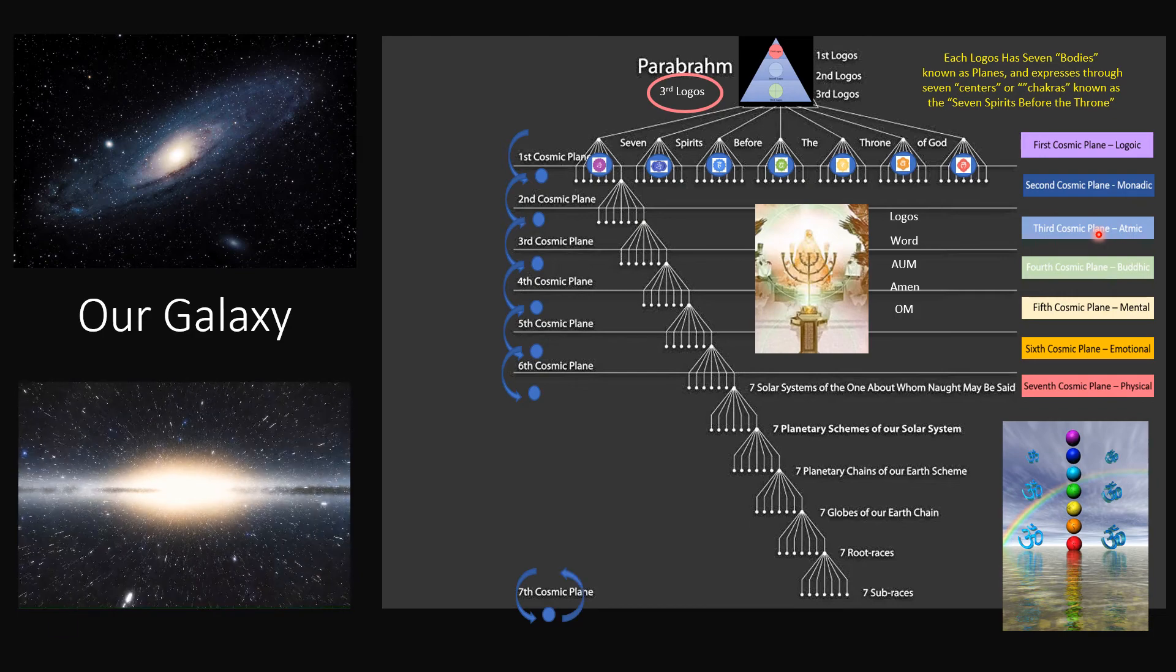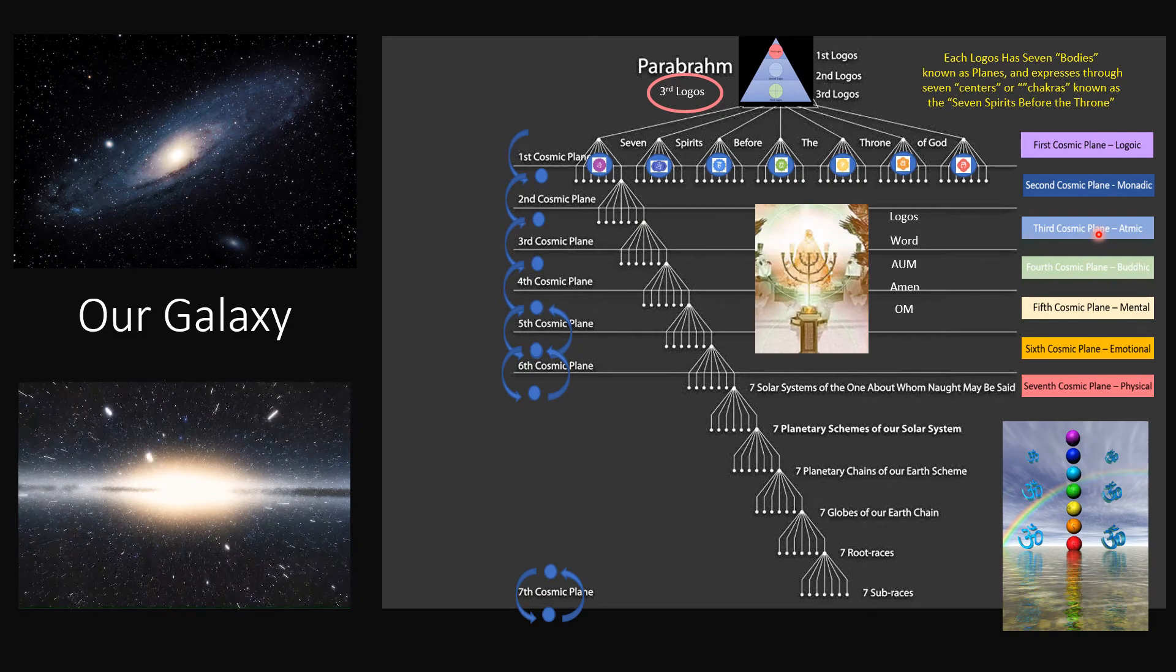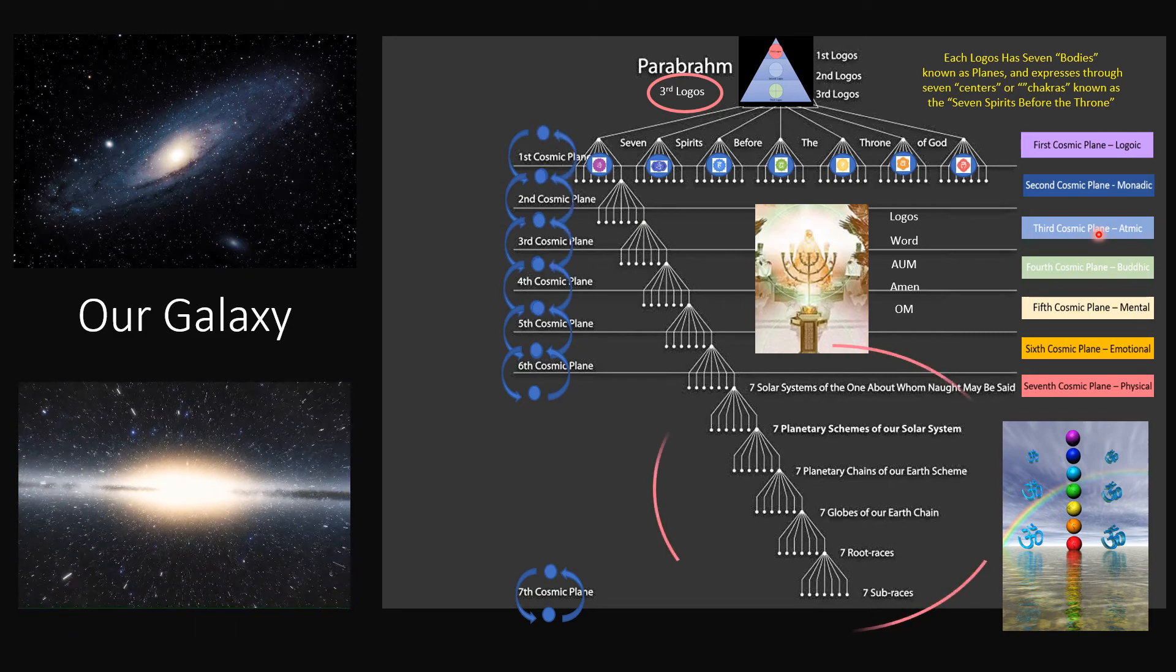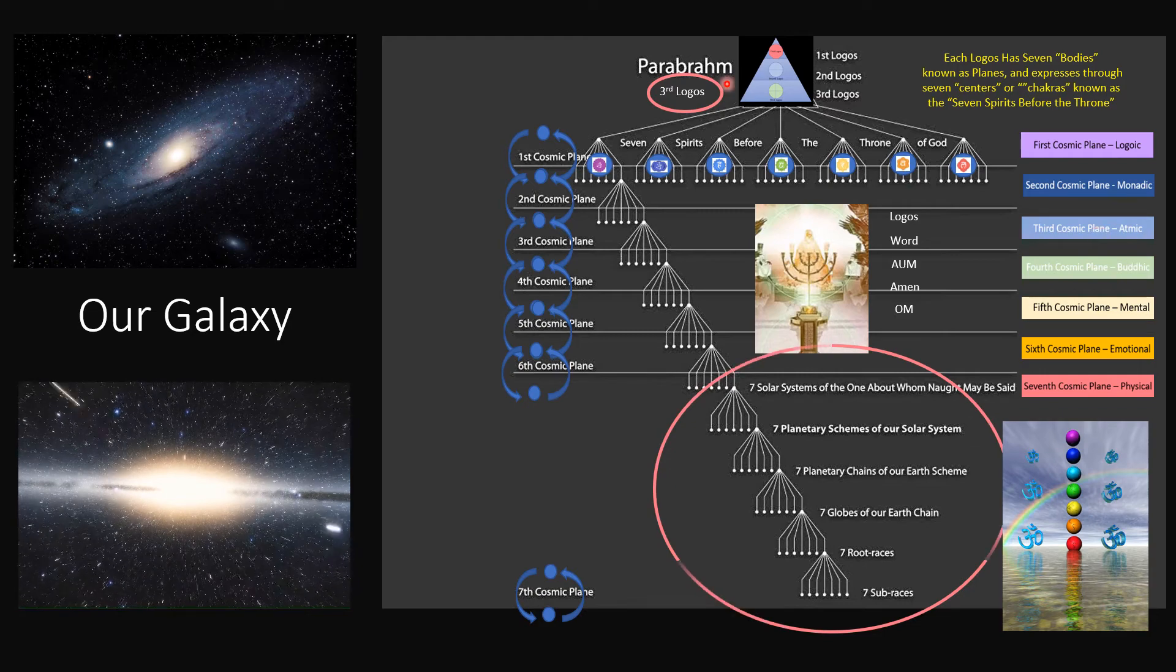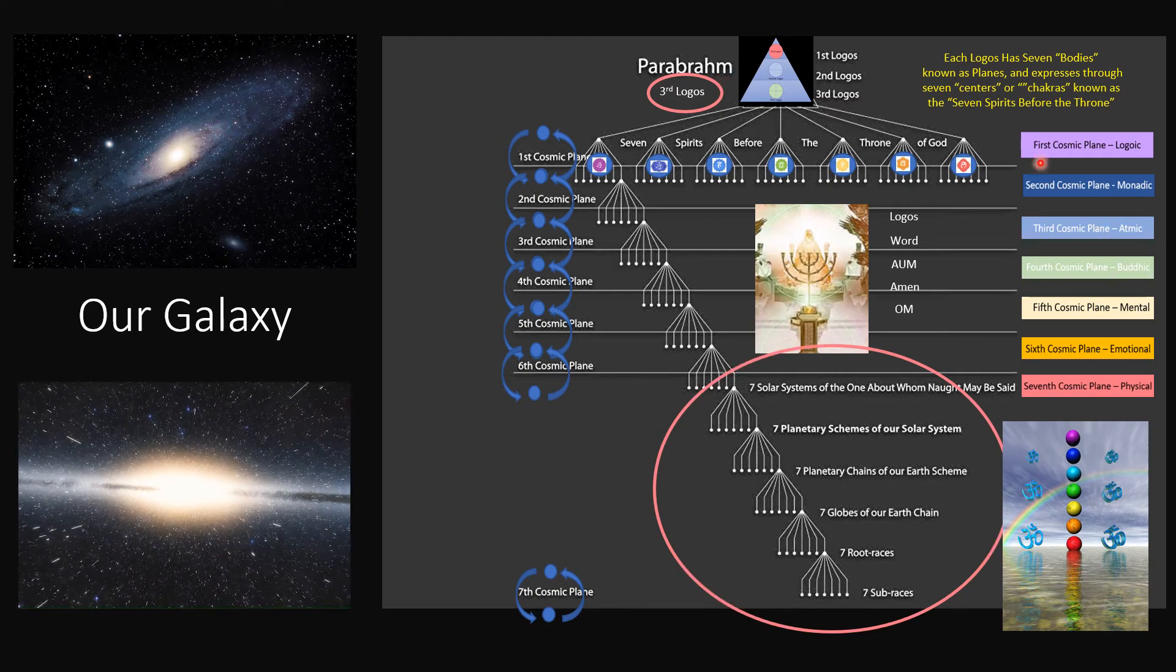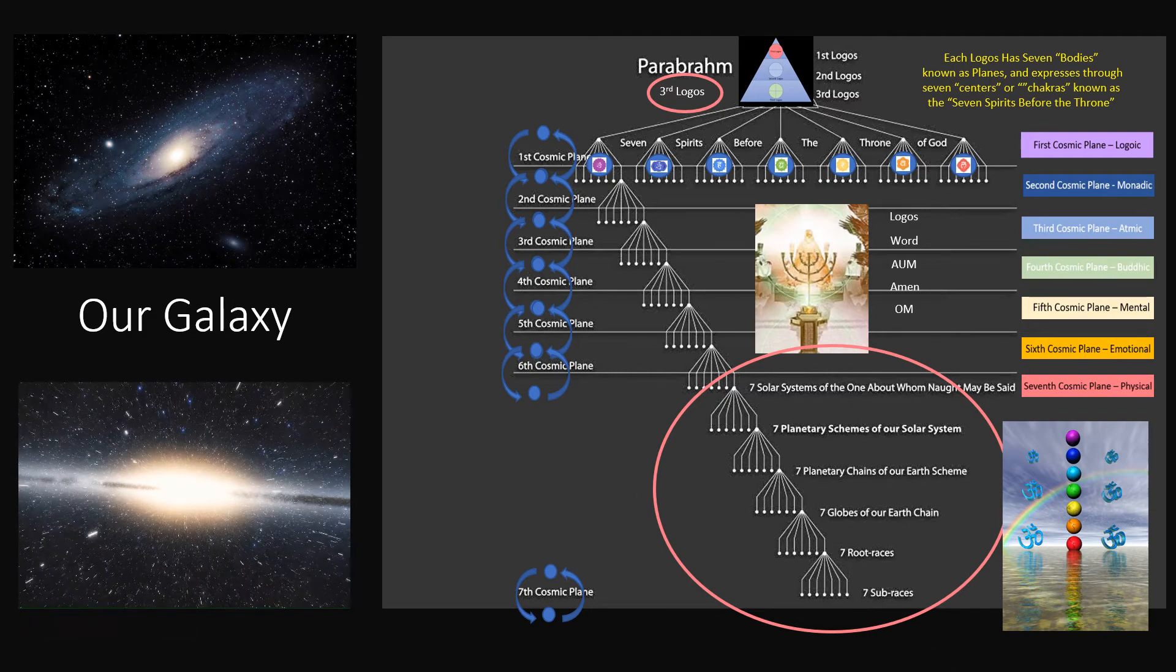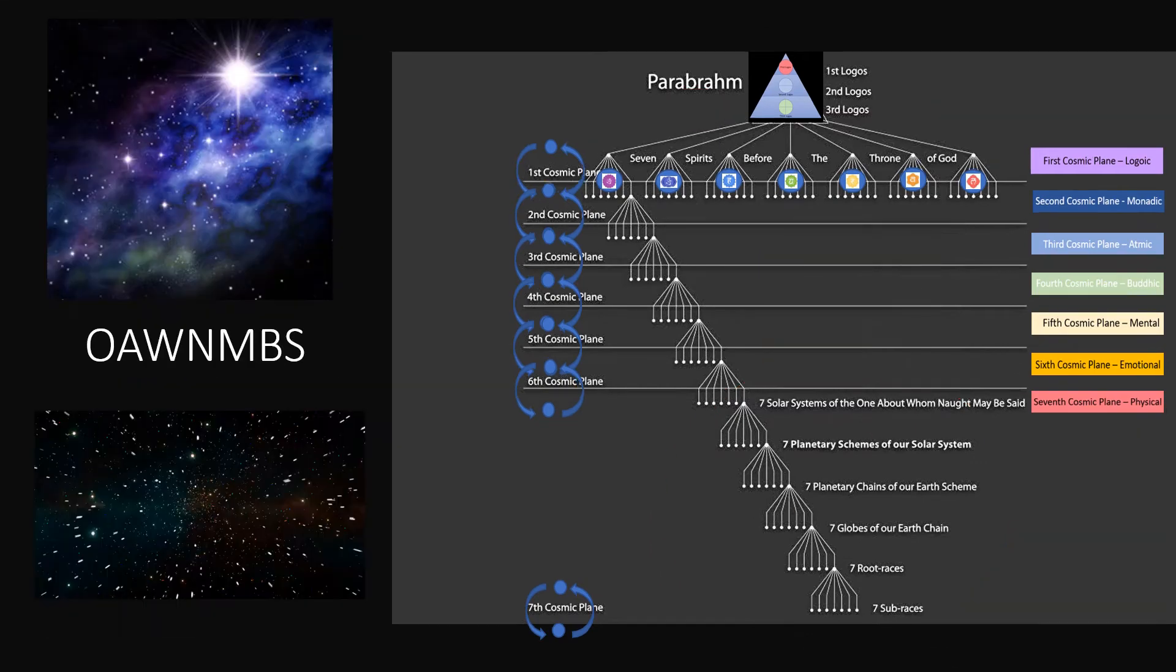And then we're going to eventually have an ascension process, but we're told that we're not there yet, where we will go back up to where we came and be back in the throne room, so to speak. Now we're going to go through the video and explain the rest of this. So let's go to the next part.